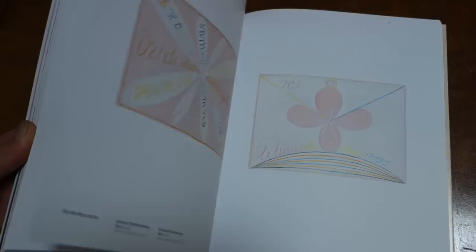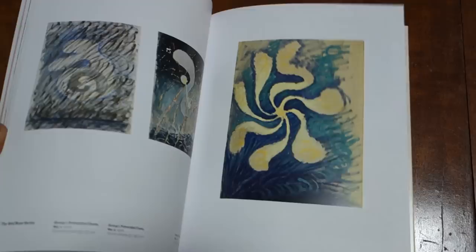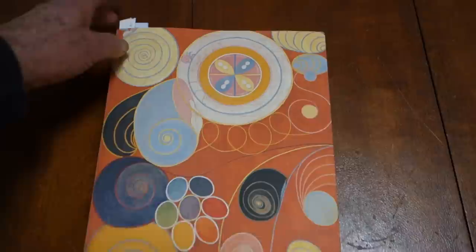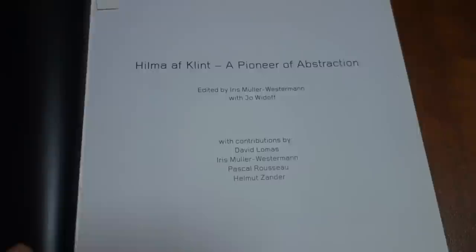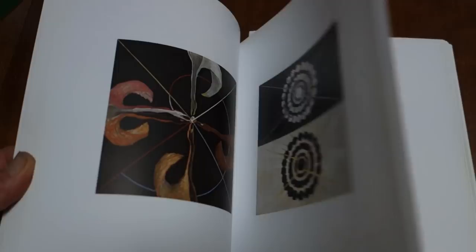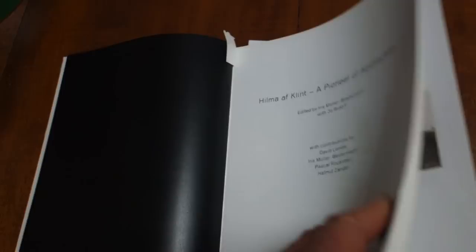I'm going to link this stuff all below. This is another catalog that was put out by the Moderna Museet in Stockholm, and this is even more inclusive. If you're interested in Hilma af Klint, either one of these books would be a good place to start. This one probably has a lot of work not sent to New York.